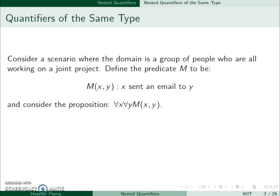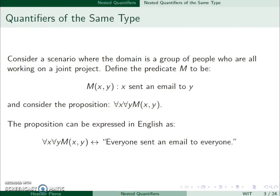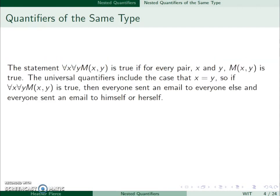Now let's consider, for all x and for all y, M(x,y). In English, this means everyone sends an email to everyone. The statement ∀x∀y M(x,y) is true if for every pair x and y, M(x,y) is true. This includes the case that x equals y. So if this statement is true, everyone sent an email to everyone else and they sent an email to themselves.